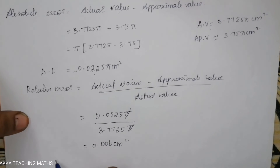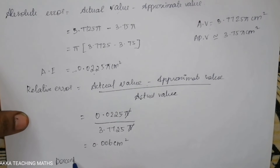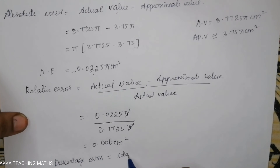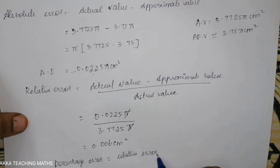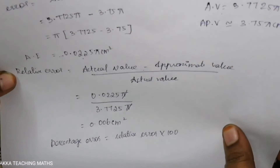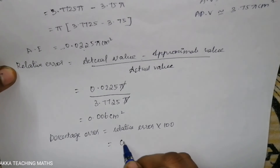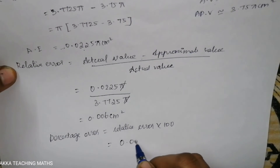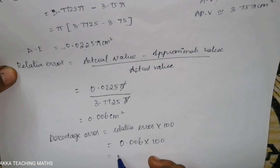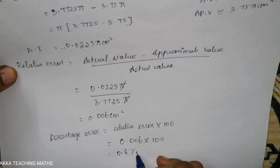The relative error is the absolute error divided by the actual value. The percentage error is relative error multiplied by 100. The relative error is approximately 0.006 cm², and the percentage error is 0.6%.